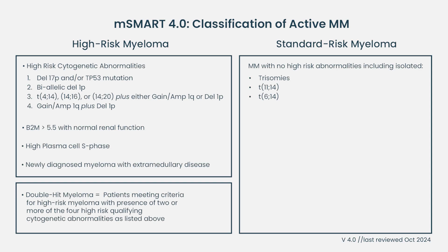Since the recording of this video, the IMWG revised the definition of high-risk multiple myeloma to include a beta-2 microglobulin level greater than 5.5 mg per liter in a patient with normal renal function as an indicator of high-risk disease, even without other adverse features. This elevated B2M level, when kidney function is normal, suggests a higher tumor burden or more aggressive disease.